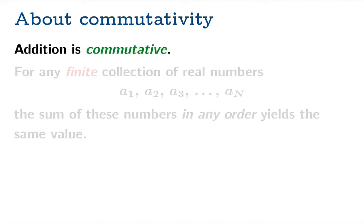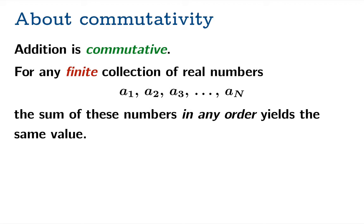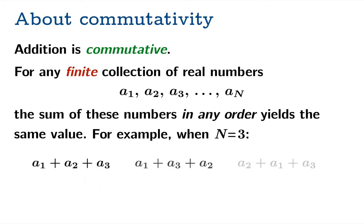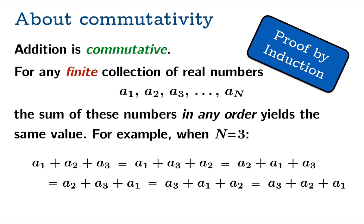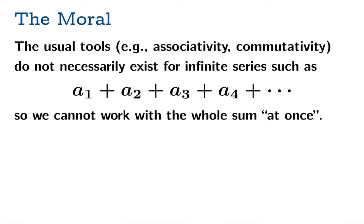Similar comments apply to commutativity. Addition is commutative, and we can extend this to a finite collection of real numbers — the sum in any order yields the same value. When n equals three, there are six ways to order the sum, and commutativity tells you all six give the same number. This too requires proof by induction from the binary case, and once again, we're not allowed to make this leap to an infinite collection of real numbers.